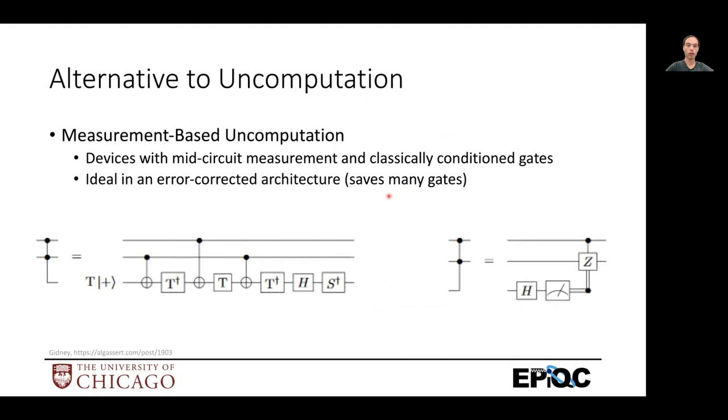And then finally, there's also alternatives to uncomputation. So this is called measurement based uncomputation where instead of reversing the computation to undo it. You actually measure the qubit you want to uncompute in a special in a certain basis that's orthogonal to the computational basis. So that you can very carefully erase it in a way that only adds a phase to the remaining qubits that you can then fix up based on the measurement results.